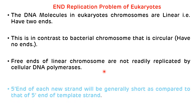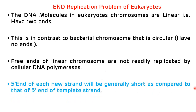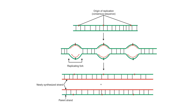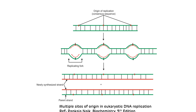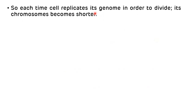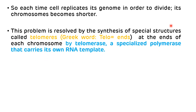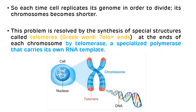The 5' end of each new strand will generally be shorter compared to the 5' end of the template strand. This picture shows the linear DNA present in the chromosome of eukaryotes. As you can see, there is a presence of two ends, which is not present in prokaryotic DNA as it is circular. So, each time a cell replicates its genome in order to divide, its chromosomes become shorter. This problem is resolved by the synthesis of a special structure at the end of the chromosome, called telomeres.